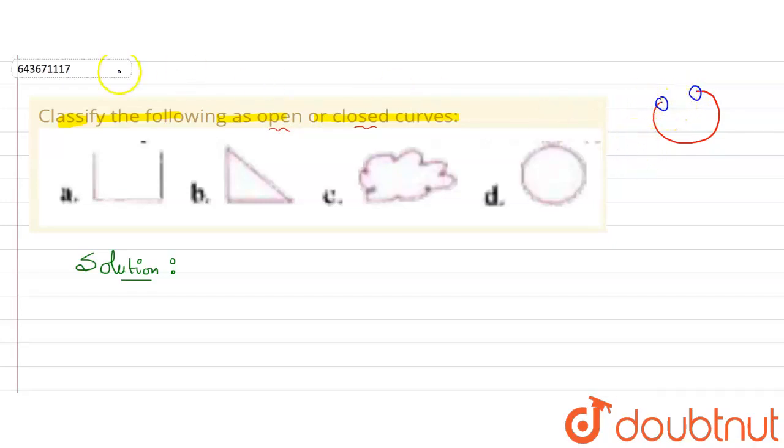If we'll talk about closed curve, suppose I am having a figure like this. Here they are having no endpoints, you can see no endpoint is there, no endpoint is present in case of closed curve.